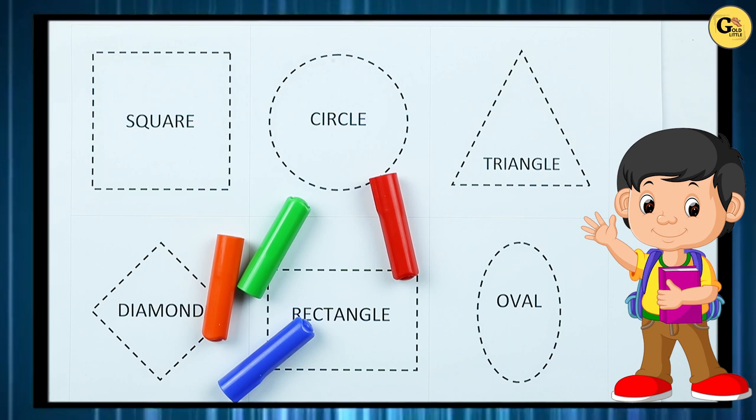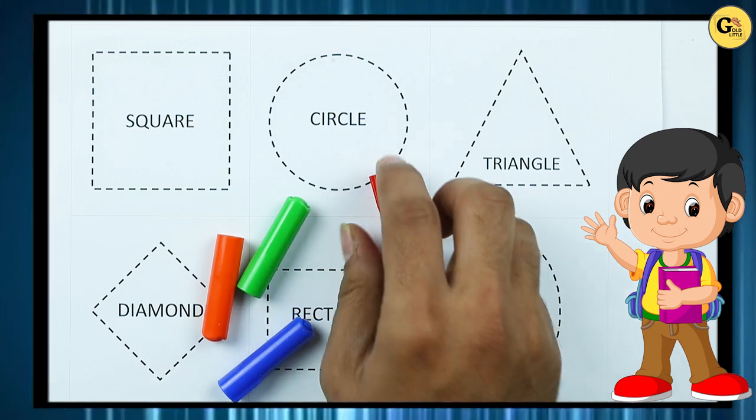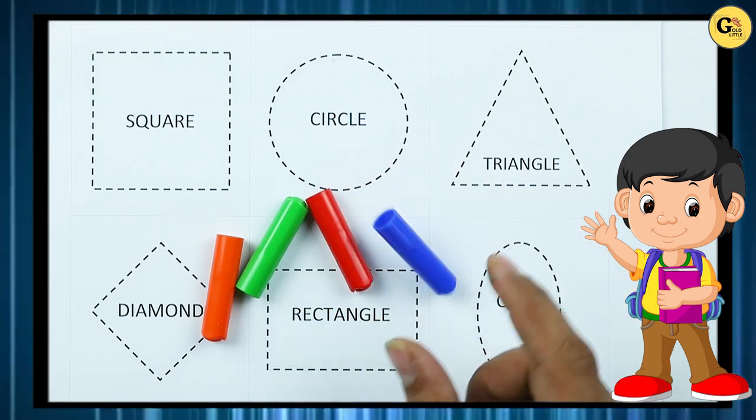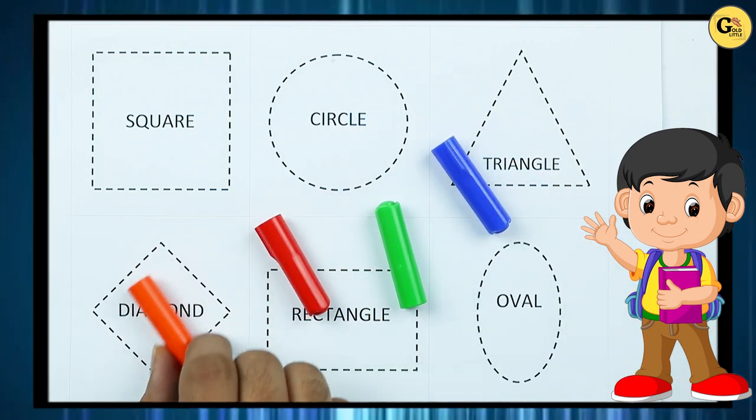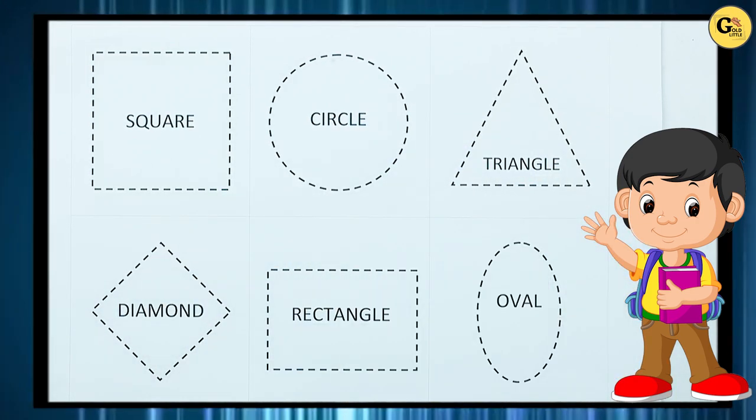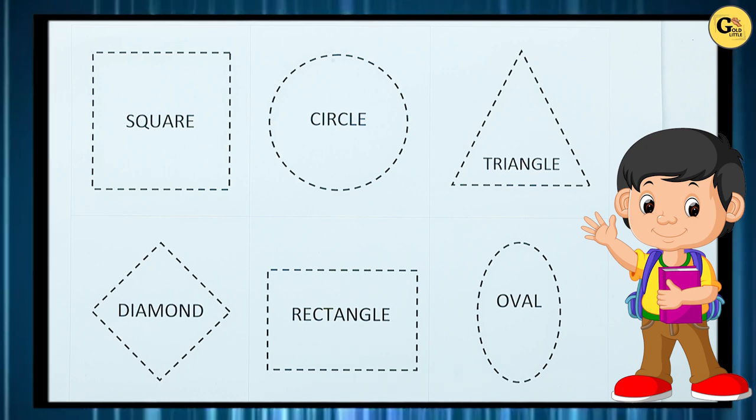Square, circle, triangle, diamond, rectangle, oval with colors: red color, blue color, orange color, green color. Let's start.